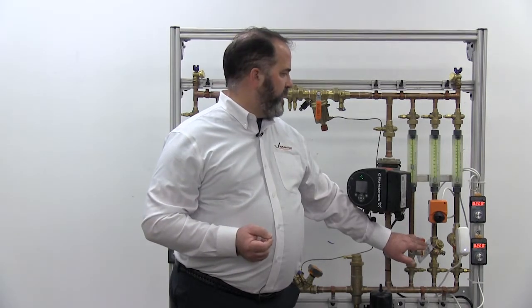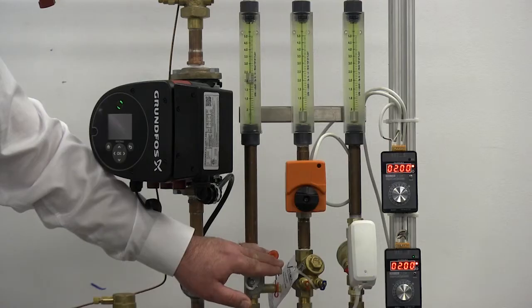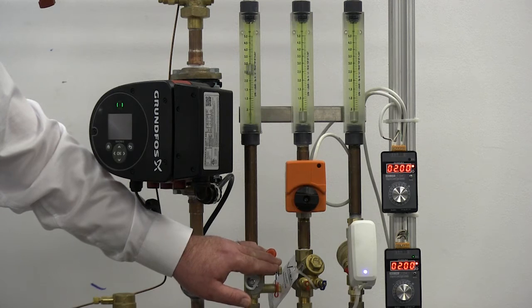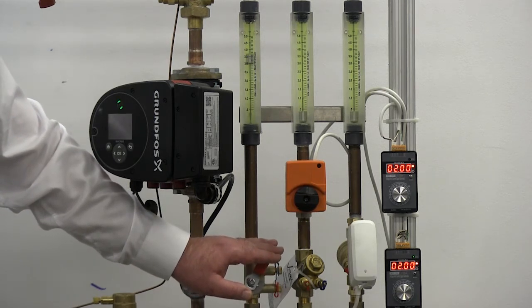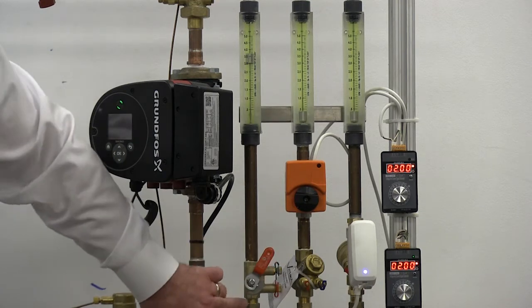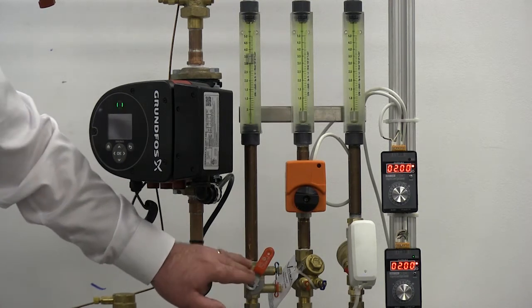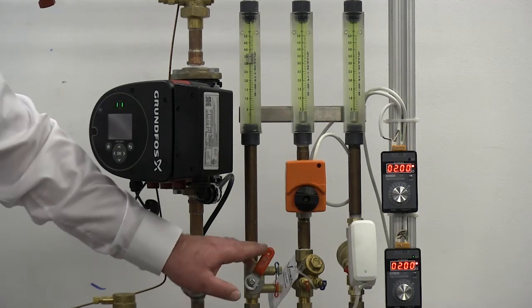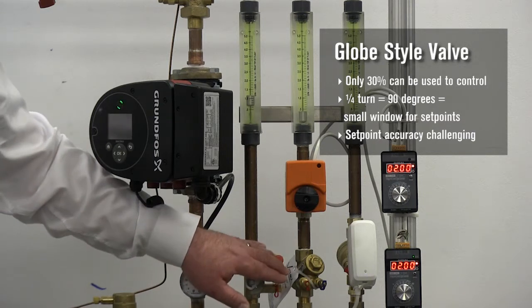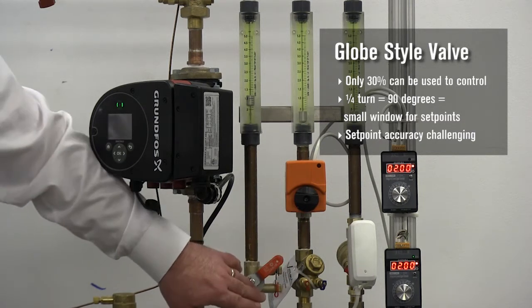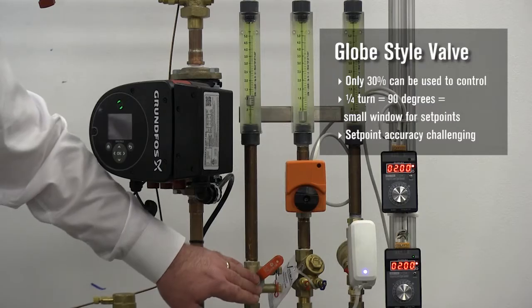Now let's open a little bit further. We're getting 2.5, 3 GPM. Now we're getting to a point where we're really outside the range of what you would use a half inch valve for, and you'll notice we're at about the 60 to 70 degree open position. Realistically, we're only using about 30% of our usable range to balance the system as opposed to just moving the valve. So all of our control has to happen within that small window.